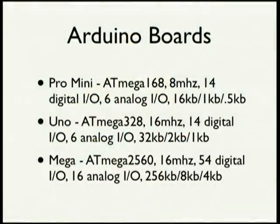The Arduinos come in multiple sizes. They range from really small ones, about one inch square, to larger systems. You can have many more I/O pins — the Arduino Mega has 54 digital I/O pins, so you could have 54 different lights, servos, or motor controls happening at the same time.